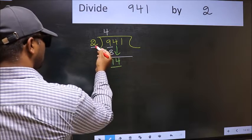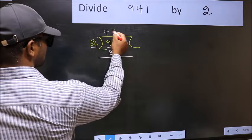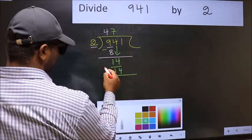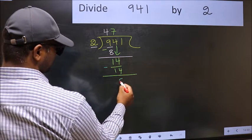Now 14. When do we get 14 in 2 table? 2 sevens, 14. Now you should subtract. 14 minus 14, 0.